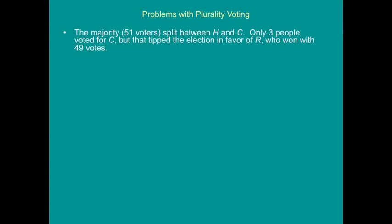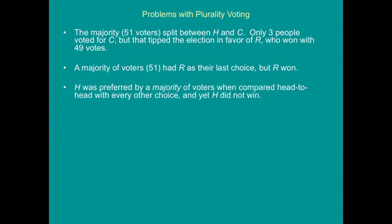To review: the majority of 51 voters split between H and C — that was 48 and 3 voters. Those three C votes tipped the election in favor of R, who won with 49. A majority of voters (51) had R as their last choice, but R won. Meanwhile, H was preferred by a majority of voters when compared head-to-head with every other choice, and yet H didn't win.